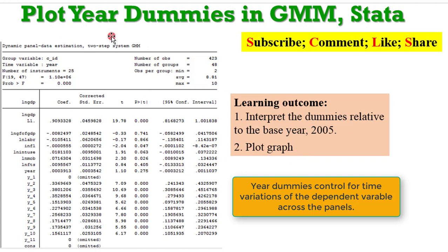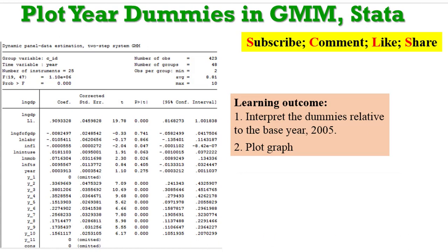By now you are familiar with this Stata output. It is the same result from the two-step system GMM that was used in our videos on interpreting GMM outputs and plotting the long run GMM estimates. So it is the same result that I'll be using, where I will extract the coefficients of the year dummies and plot them in a graph.